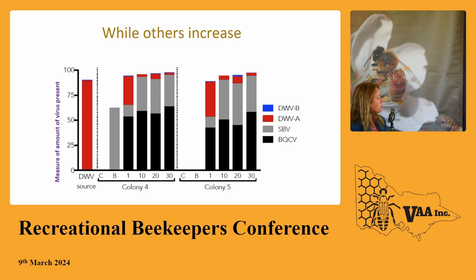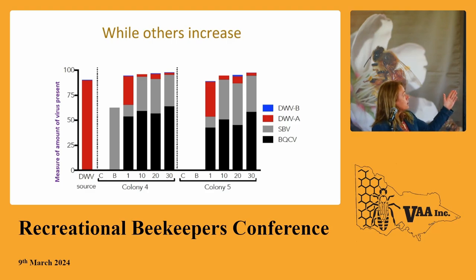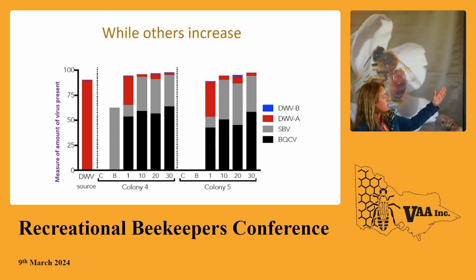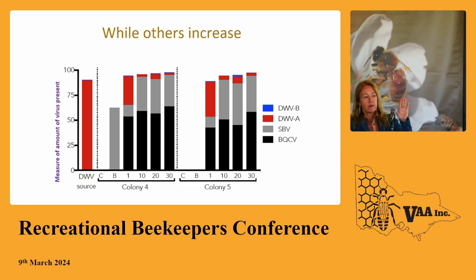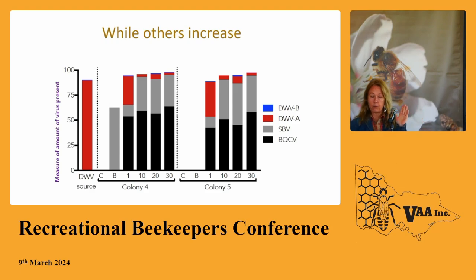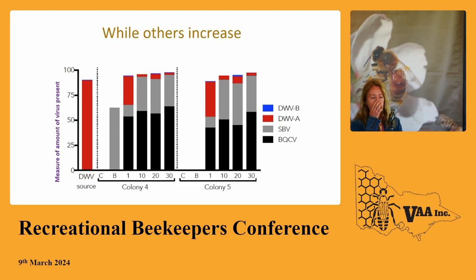The result was surprising given how infamous deformed wing virus is: DWV just disappeared from our samples. What we found instead was sacbrood virus and black queen cell virus — they completely took over.